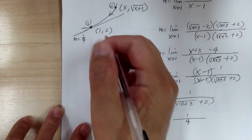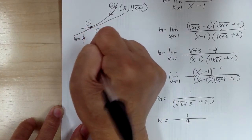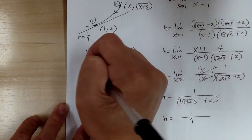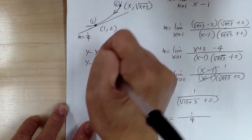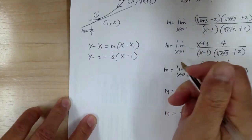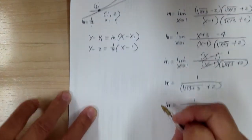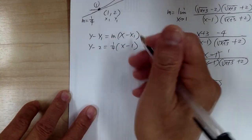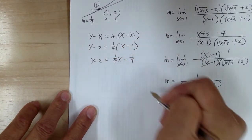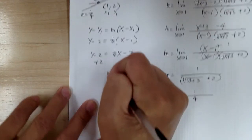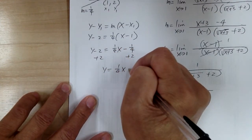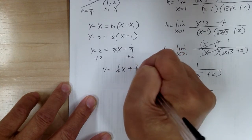Now you have a point and a slope, so you can figure out your equation. You get y minus y1 equals m times x minus x1. So you get y minus 2 equals one fourth times x minus 1. That's your x1, y1. Work it out — so y equals one fourth x plus 7 over 4.